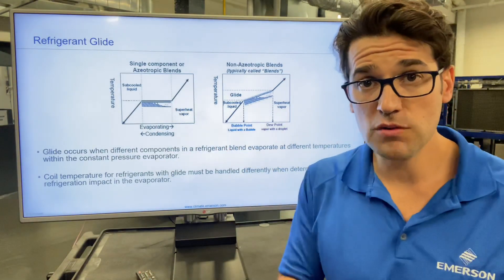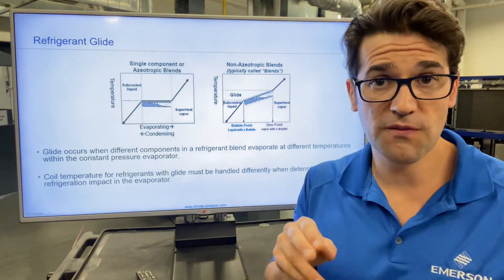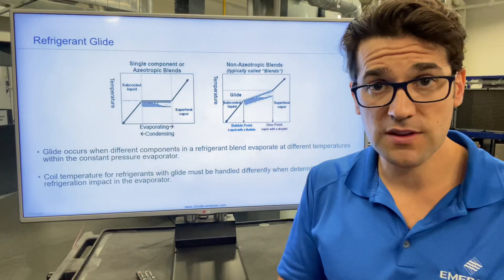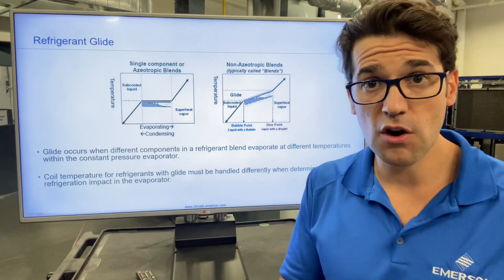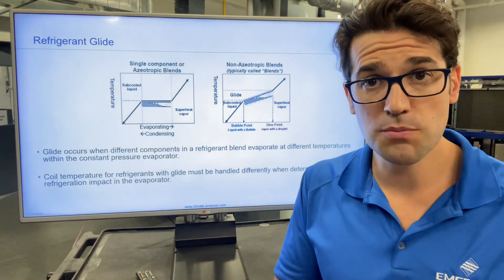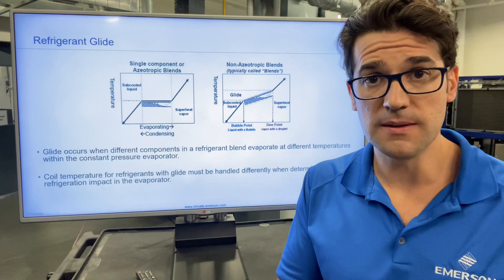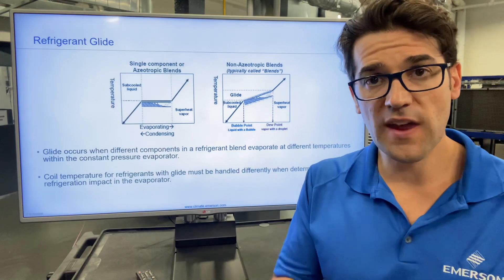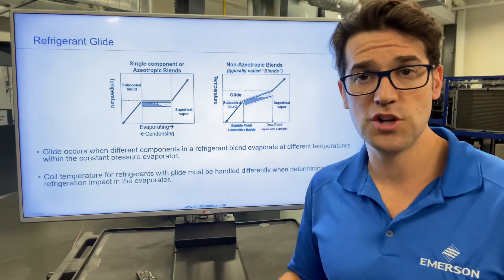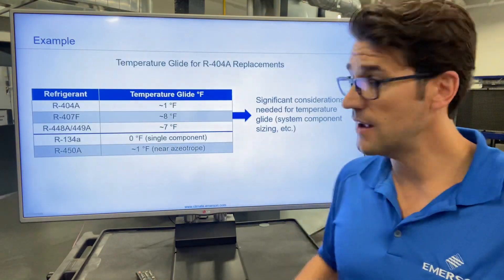Because if you don't and you use the bubble point, you could flood back that compressor and have no superheat, or you have way too much superheat and cause overheating. So it's very important to use the dew point when you're checking superheat because of this.